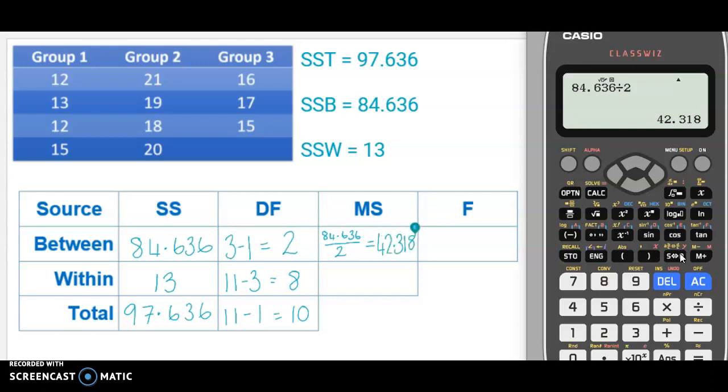I then do the same for my within row. And I do the sums of squares, 13, divided by the degrees of freedom, which was 8. And again, I want that as a decimal, 1.625.